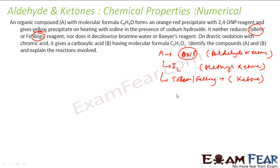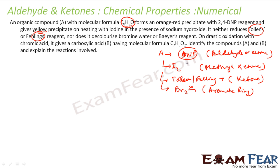Also, compound A does not decolorize bromine water, meaning there is no decolorization. That means it is aromatic. With the formula C8H8O, there is a lot of unsaturation — it could be a double bond or a ring. Since there is no change in bromine water, it must be an aromatic ring, not an alkene double bond.